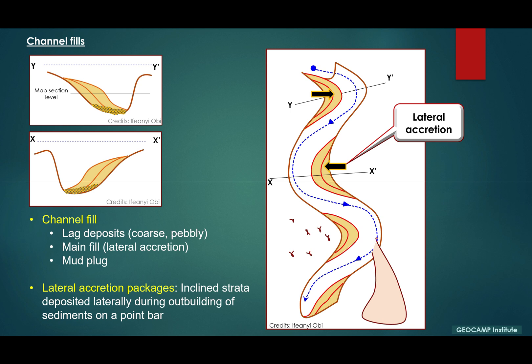Now lateral accretion packages generally are inclined strata deposited during outbuilding of sediments on the point bar. So along this line, we have crossbeds, and this is suggesting that there's movement in this direction and also in this direction, toward the inner bank.